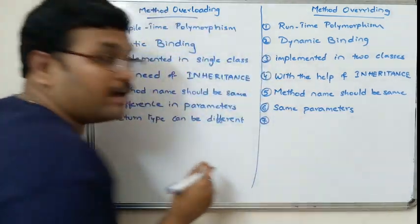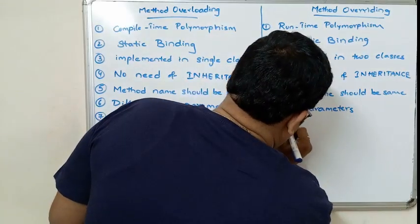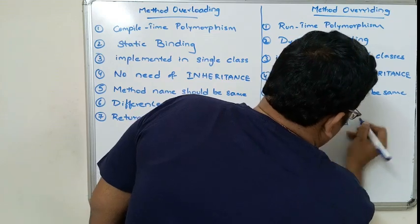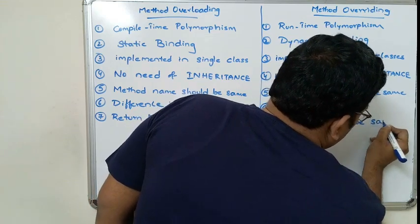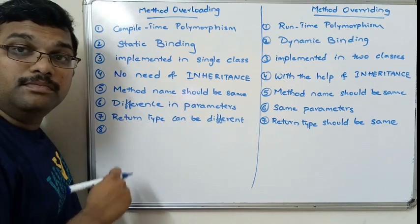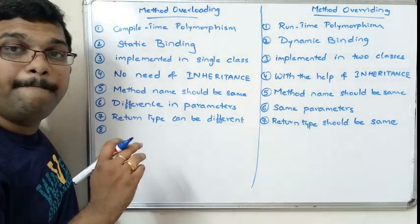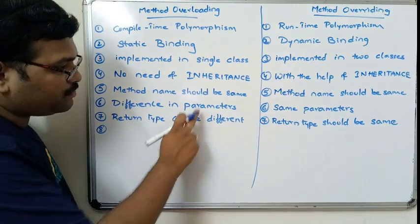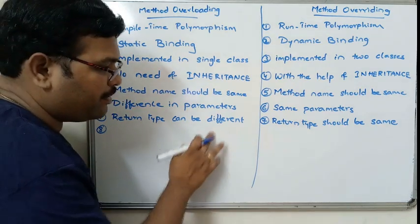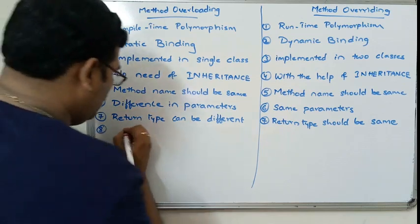In method overriding, the return type should be the same. Also, the scope may be different in overloading, whereas in overriding the method name, parameters, return type, and scope must all be the same.